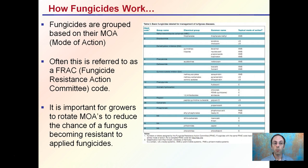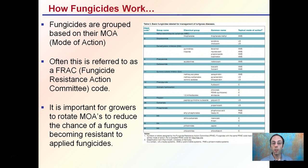Fungicides are grouped by their modes of action, abbreviated MOA. These are often referred to as FRAC codes, which stands for Fungicide Resistance Action Committee Code. How a fungicide works determines its classification. It's important for growers to rotate modes of action to reduce the chance of fungus becoming resistant to applied fungicides. If you rotate fungicides but they share the same mode of action, you're really not rotating anything.